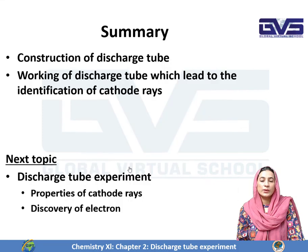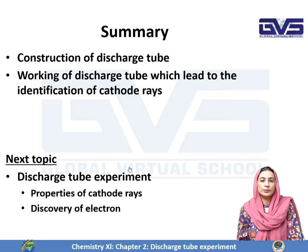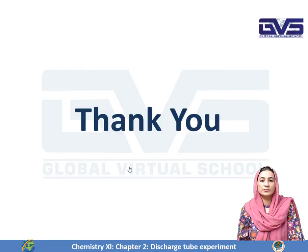This was all about the construction of the discharge tube, the experiments, and the conditions in the discharge tube. Our next topic will be the continuation of the discharge tube, where we will discuss the properties of the cathode rays, which will lead to the discovery of the electron. Thank you.